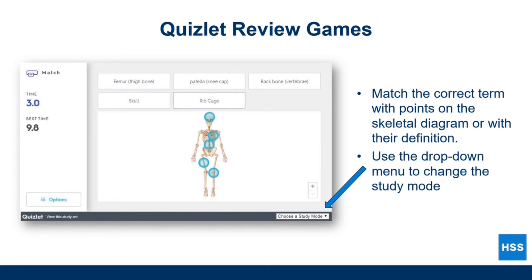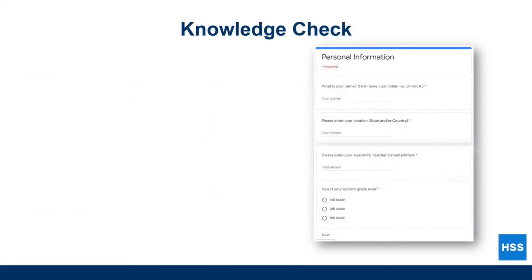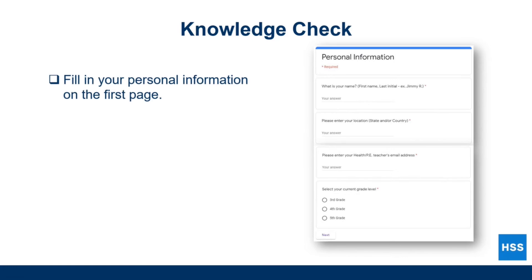Before completing the knowledge check, be sure to fill in your personal information including your name, location, grade level, and your health PE teacher's email address. This information allows us to share your progress and scores with your teacher. Feel free to return to previous pages to review any information you may have missed. Once complete, click on the Next button in the lower left-hand corner to move on to the knowledge check.